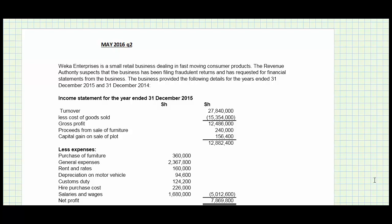Welcome to this session. We're looking at May 2016 question number two. We're told that Wekal Enterprises is a small retail business dealing in fast-moving consumer products. The revenue authority suspects — and that's a keyword — it suspects that the business has been filing fraudulent returns and has requested financial statements from the business. The business provided the following details for the year ending 31st December 2015 as well as 2014.